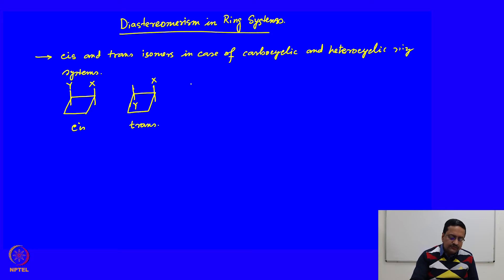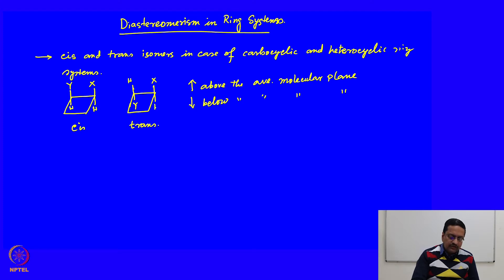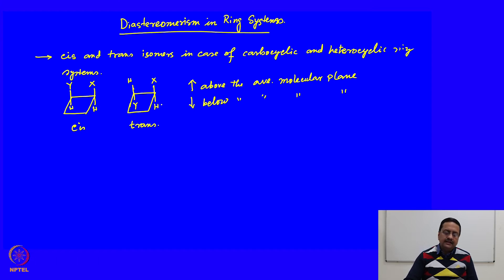In ring systems, some groups are considered to be above the average molecular plane. Beyond cyclopropane, cyclobutane, cyclopentane, cyclohexane and so on, the carbon atoms are not in one plane — they reside in different sets of planes. Therefore, based on the orientation of the two groups above and below, we identify them as cis and trans isomers.